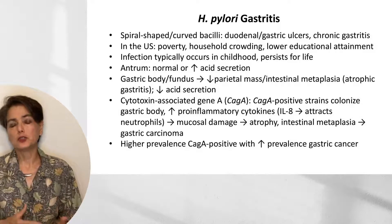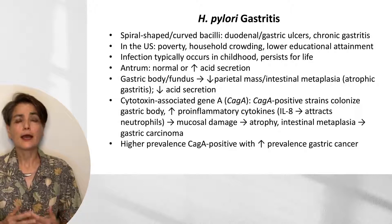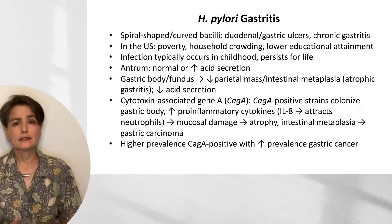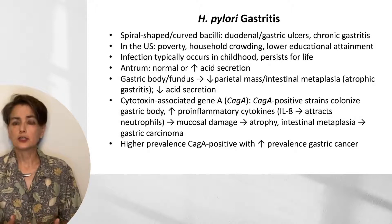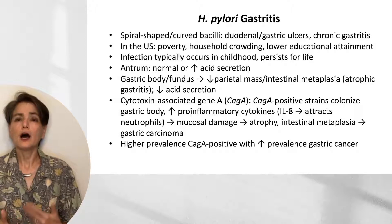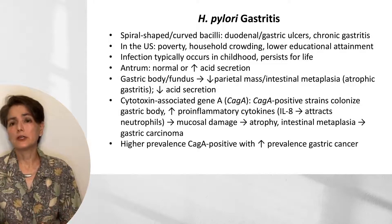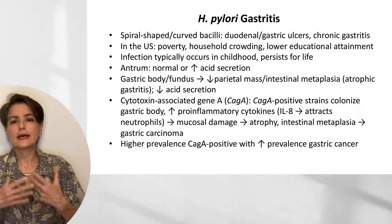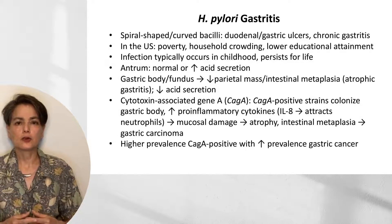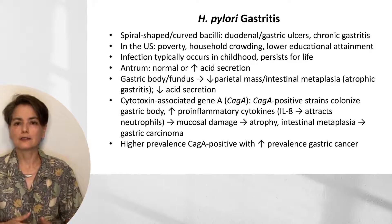Helicobacter pylori gastritis is due to a spiral-shaped or curved bacillus that is closely associated with ulcers of the duodenum and stomach, as well as with chronic gastritis. In the United States, H. pylori gastritis is associated with poverty, household crowding, and lower educational attainment, among other socioeconomic factors. Infection typically occurs in childhood and persists for life. When you get that initial acute H. pylori gastritis, it is typically limited to the antrum, and the gastric response will be either normal or slightly increased acid secretion.